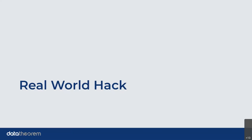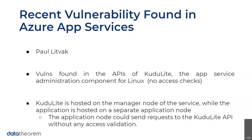So what actually happened? This was a vulnerability that existed in the Azure App Services, and it specifically impacts Linux services. This is where they were using Kudu Light, which is the app service admin component for Linux, and they actually had no access checks employed.